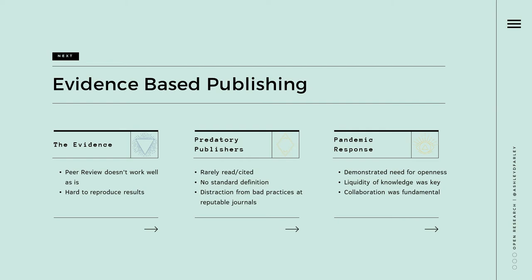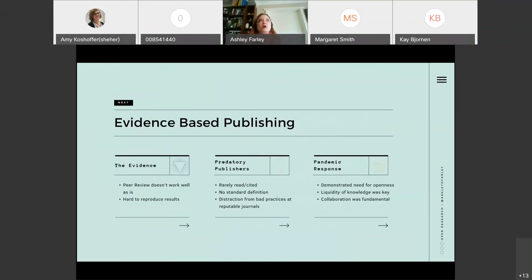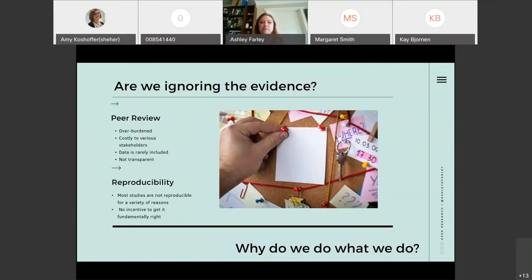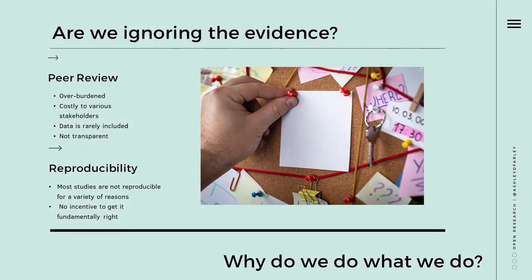Moving on to evidence-based publishing. I feel like we have the scientific method — a very specific way of researchers doing their experiments and their work — and we have a specific way of disseminating it, but we don't seem to interrogate that dissemination method as much as we do the way research is conducted itself. We have a lot of evidence that peer review isn't working well as is, and it's quite hard to reproduce results. I'm going to talk briefly about predatory publishers and kind of my differing view on their threat to the ecosystem, and then a little bit more on the pandemic response. Are we ignoring the evidence here?